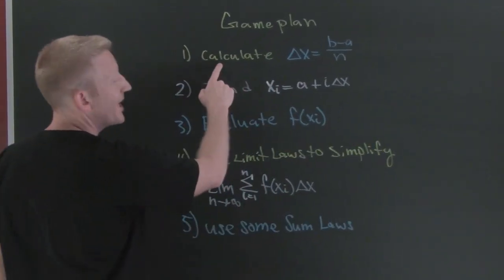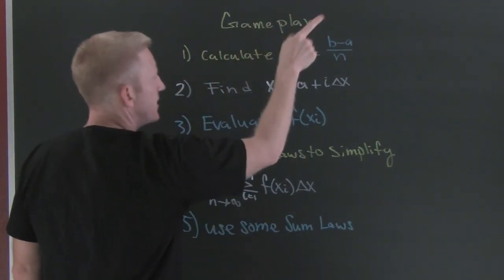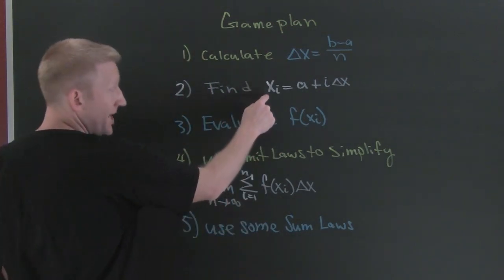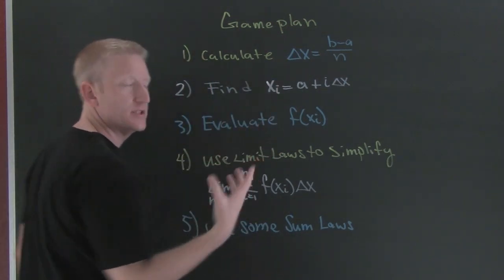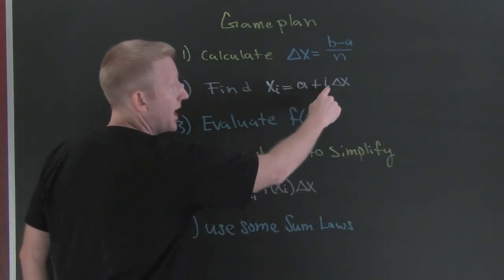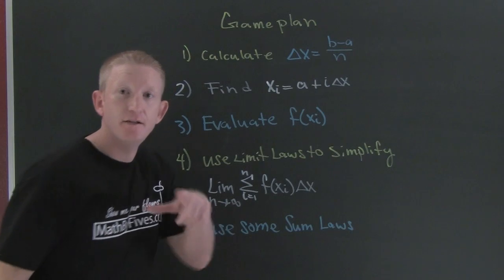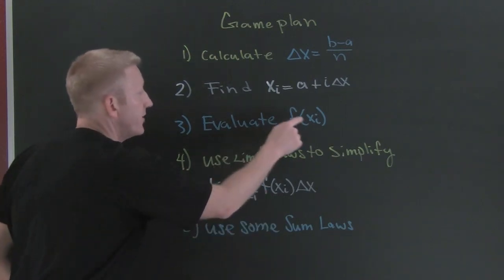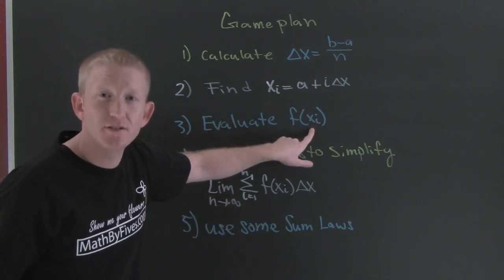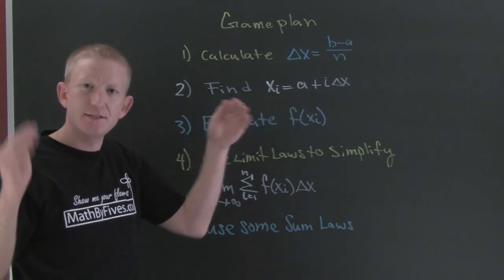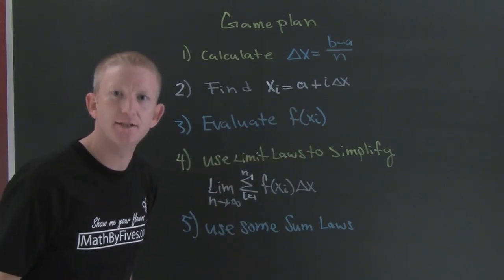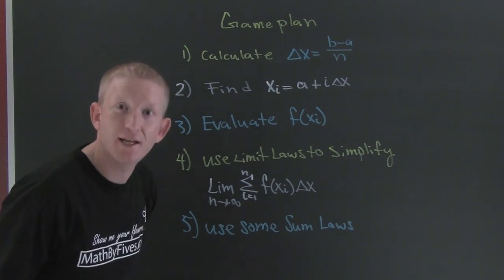First, we're going to calculate delta x — that's b minus a over n. Then we're going to find xi, which is your general x: a plus i delta x. And then we're going to evaluate f of xi. After we find that, we're going to stick it into our original function. Why are we doing it in pieces? It's going to chunk it, and when we chunk it, we make it easier on us.